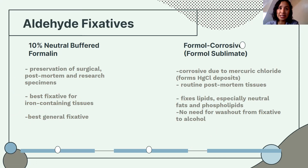Next is formal corrosive or formal sublimate — formaldehyde plus mercuric chloride. Be careful because it can corrode metals due to the mercuric chloride. This is a compound fixative used for post-mortem and autopsies. It also fixes lipids and does not need to be washed out.